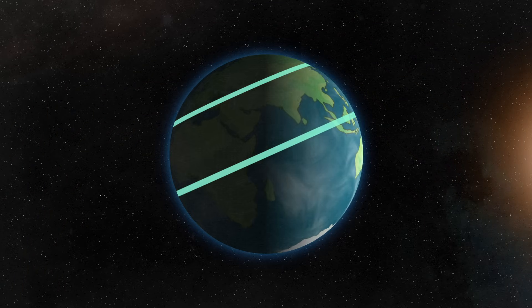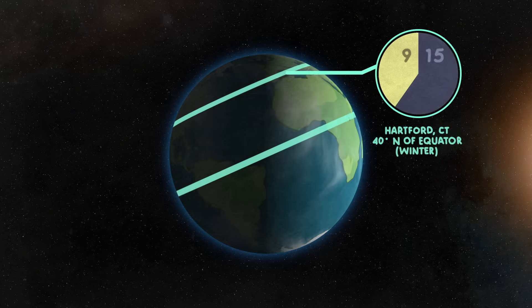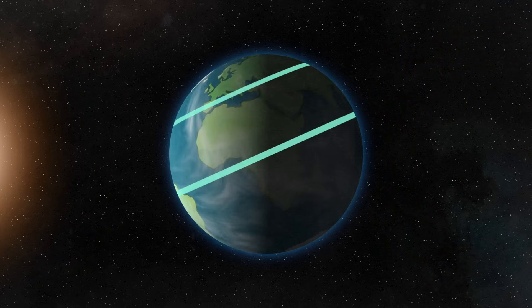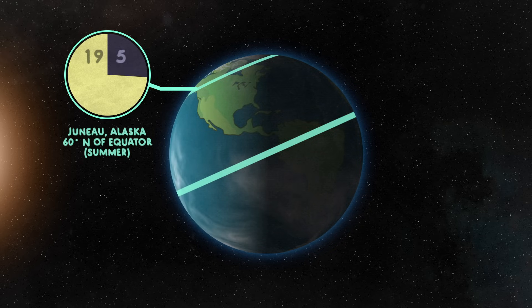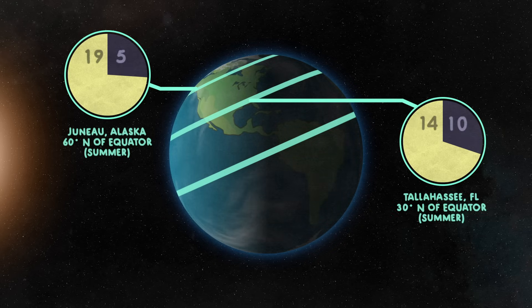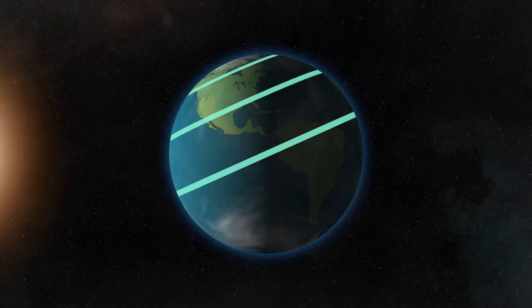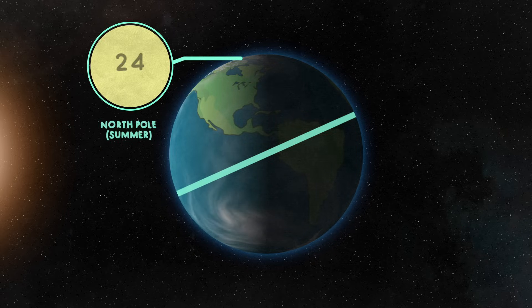In the winter, the opposite happens. There are many more hours of cooling time than warming time. And day after day, this results in a cooling effect. The interesting thing is, as you move north, the number of daylight hours in summer increases. So Juneau, Alaska would get about 19 hours of daylight on the same summer day that Tallahassee, Florida gets about 14. In fact, in the summertime at the North Pole, the sun never sets.